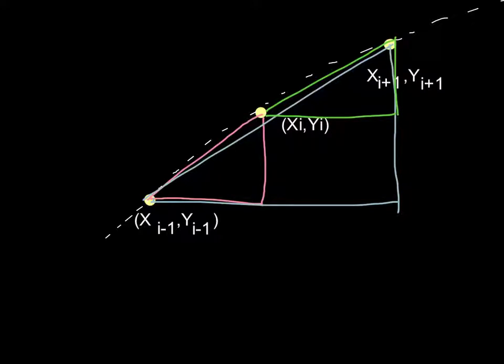And similarly, you would take the x-coordinate after the point of interest and the x-coordinate prior to the point of interest. And that distance will give you the run. So you have rise over run, and that's a good estimate of what the slope is at this point.